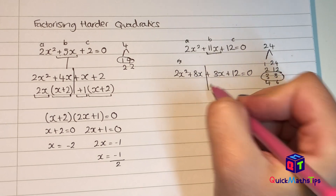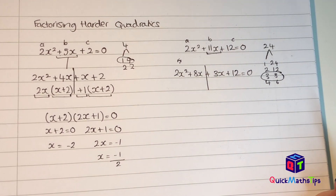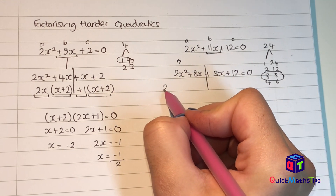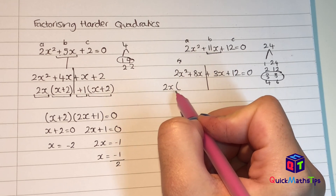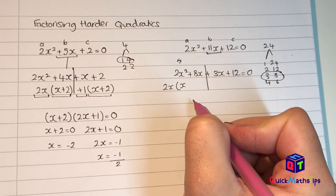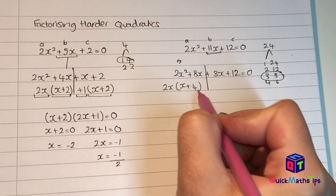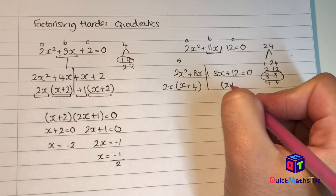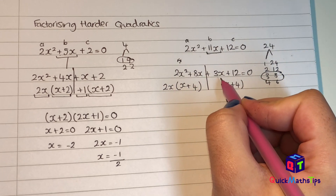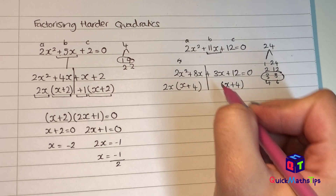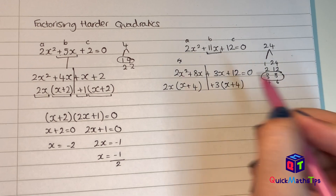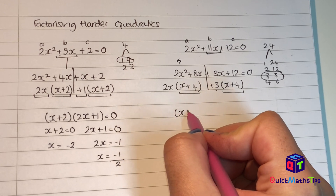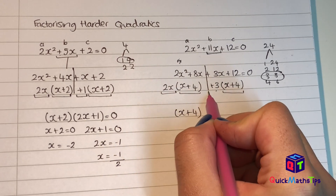I split this down the middle and factorise both sides individually. What goes into 2x squared and 8x? I can pull out 2x. Inside the bracket: 2x squared divided by 2x is x, and 8x divided by 2x is plus 4 — so x plus 4 inside my brackets. Because I have x plus 4 here, I have to have x plus 4 on the other side. 3x divided by x is 3 and 12 divided by 4 is 3, so plus 3 on the outside. My final two brackets are the repeated bracket x plus 4, and the outside stuff which is 2x plus 3.